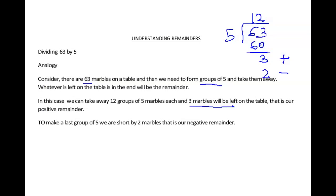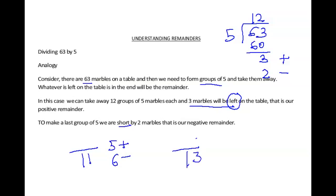Whatever is left is the positive remainder, and whatever you are falling short is the negative remainder. So if I divide anything by 11 and my positive remainder is 5, my negative remainder will be minus 6. If I divide anything by 13 and my negative remainder is minus 3, my positive remainder will be plus 10.